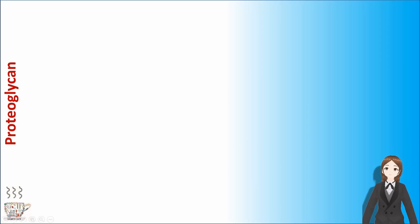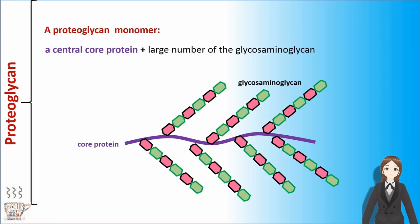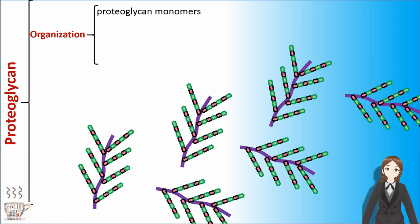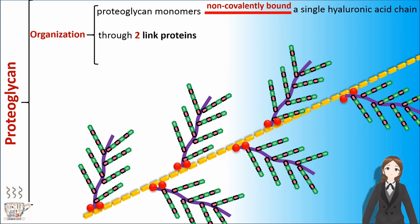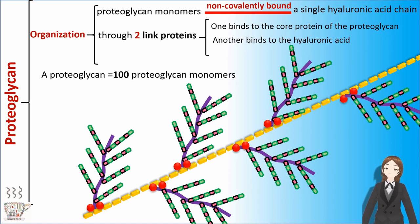A proteoglycan monomer is a central core protein plus a large number of glycosaminoglycan chains. Regarding proteoglycan organization, proteoglycan monomers bind non-covalently to a single hyaluronic acid chain through two link proteins — one binds to the core protein of the proteoglycan, and another binds to the hyaluronic acid. A proteoglycan aggregate is made of about 100 proteoglycan monomers.